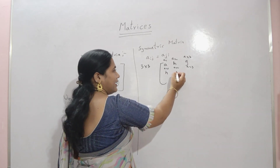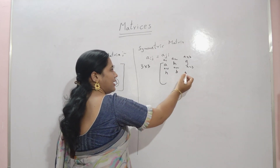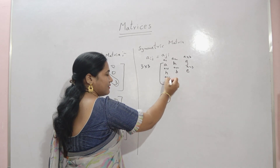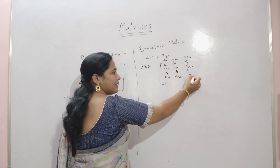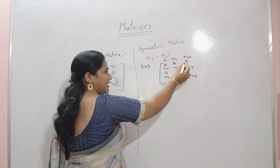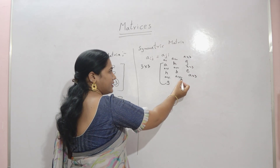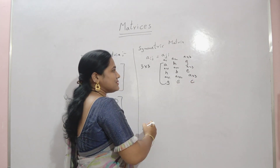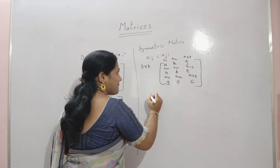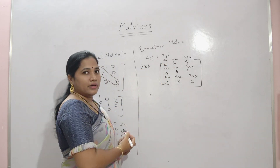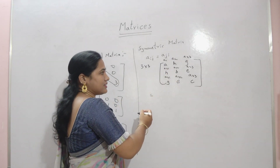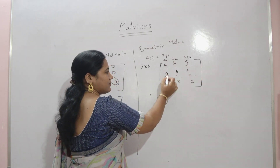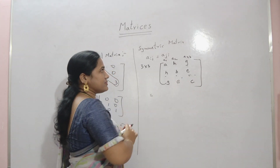Taking values: A22 is B, and A23 is E. For the third row: A31, A32, A33. A31 and A13 are both G, and A32 and A23 are both E, and A33 is C. So the symmetric matrix example is [A, H, G; H, B, E; G, E, C], where Aij equals Aji.